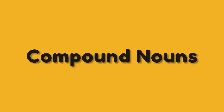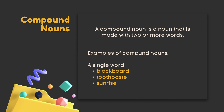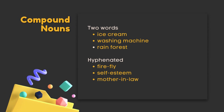Compound nouns. A compound noun is a noun that is made with two or more words. Examples include single words like blackboard, toothpaste, sunrise; two-word forms like ice cream, washing machine, rainforest; and hyphenated forms like firefly and self-esteem and mother-in-law.